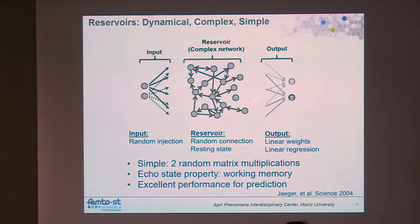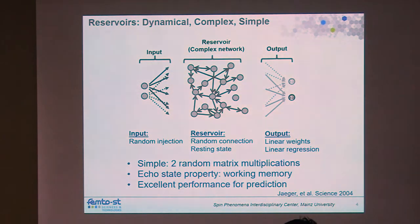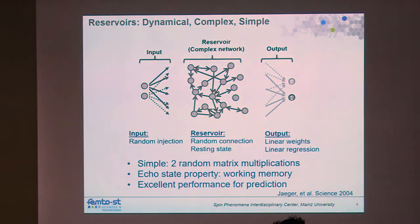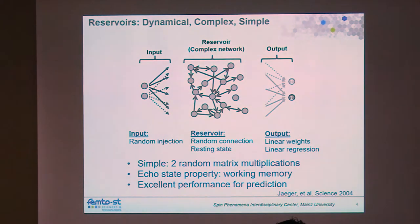One consequence of random connectivity is connection loops: the signal of one node can propagate to another and return after several time steps. This means the system retains information about previous states — the echo state property. By mixing information from different time steps, you can solve problems with temporal context, such as signal prediction or language models where you need context of a sequence of words. This is different from most deep feedforward networks, which lack temporal context in their state variables.